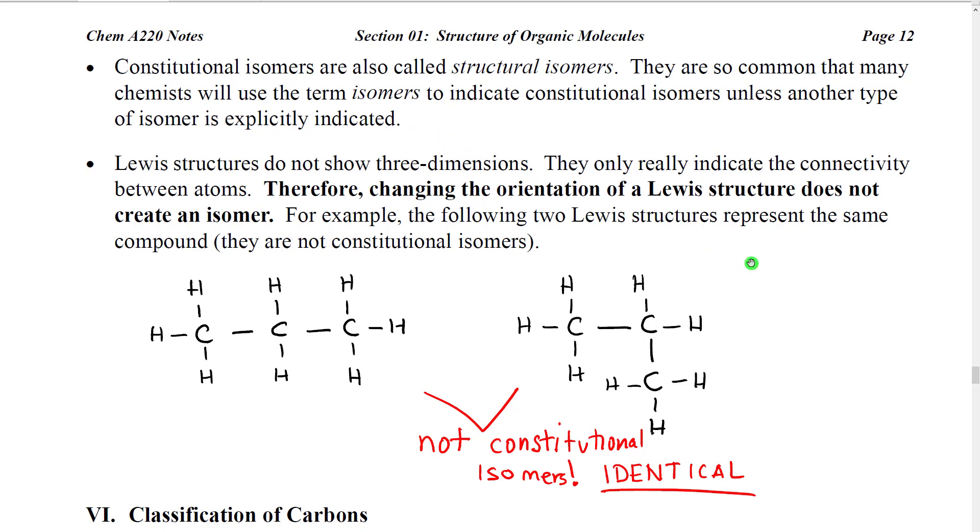Now, one of the things you need to understand about Lewis structures and isomers is that Lewis structures do not show three dimensions. They literally only show that things are connected. So, if we change the shape of that Lewis structure, the connectivity doesn't necessarily change. And therefore, we will not be drawing an isomer.